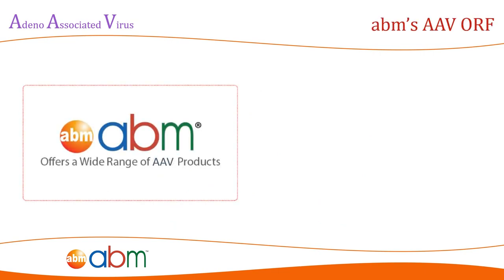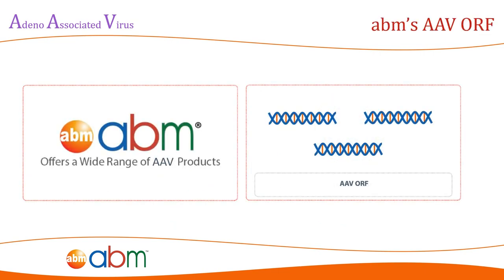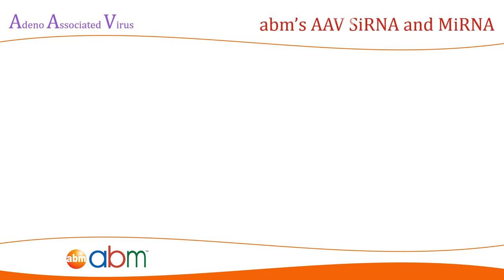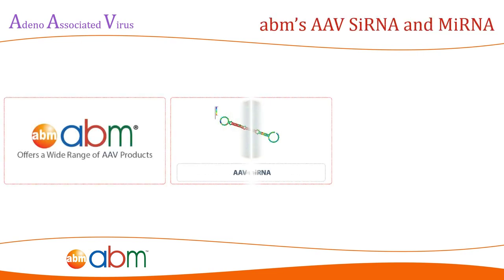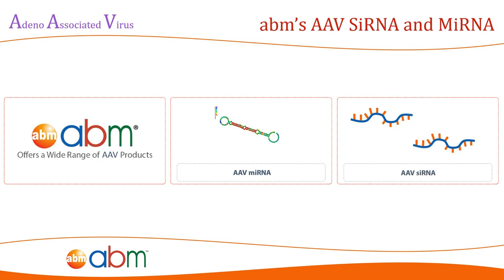ABM offers a wide range of AAV products and services which can meet a broad range of experimental requirements. ABM offers libraries of open reading frame sequences in human, mouse, and rat genes, with over 30,000 individual ORF products available in both AAV viral vector or as packaged virus. ABM also offers shRNA and microRNA for gene knockdown applications, also available in both packaged viruses or AAV viral vectors.